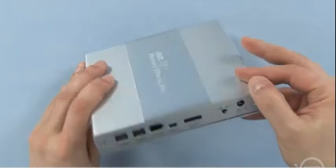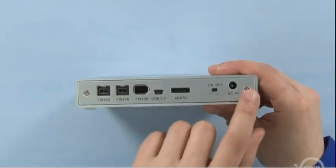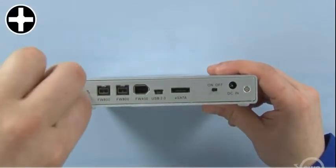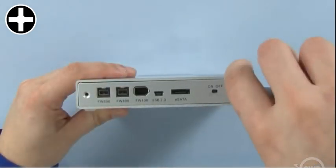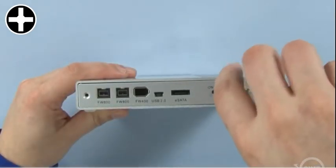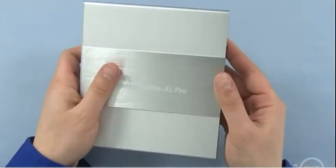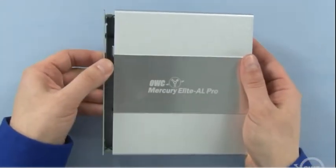The first step is to remove the two Phillips screws on the rear panel of the enclosure. This will allow you to slide the drive tray out of the front of the unit.